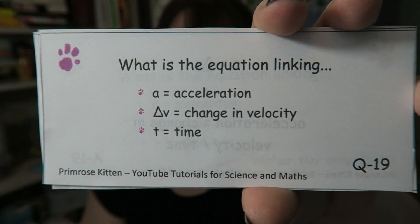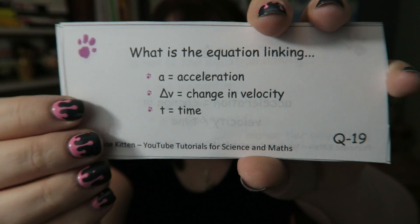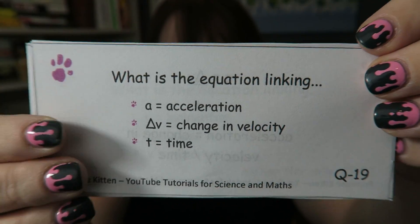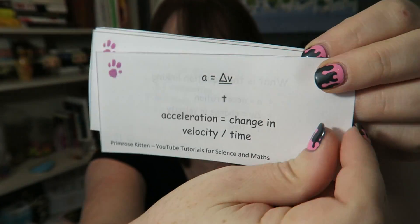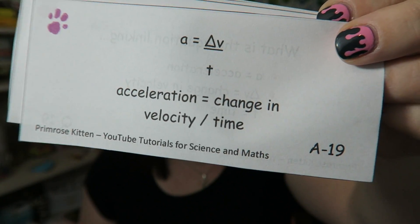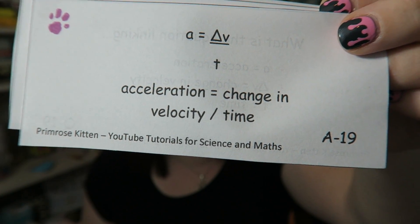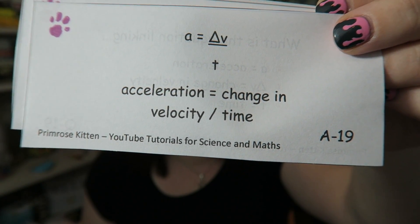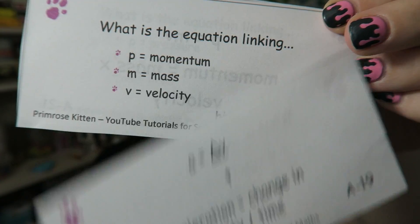What is the equation linking acceleration, change in velocity, and time? Acceleration is change in velocity over time, or final velocity minus initial velocity.